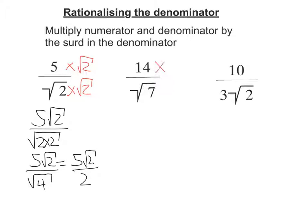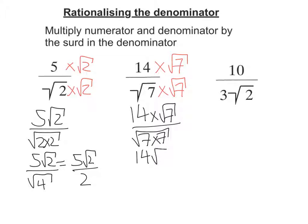Second one, multiply by the surd on the bottom, so root 7 this time. On the top I'm going to get 14 times root 7. On the bottom I'm going to get the square root of 7 times 7. So I'm going to get 14 root 7 on the top and on the bottom root 49. The square root of 49 is 7, so I get 14 root 7 over 7.